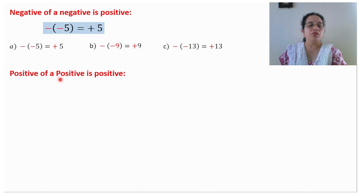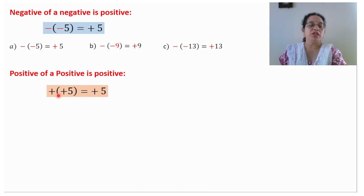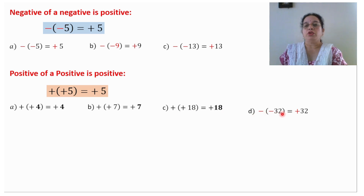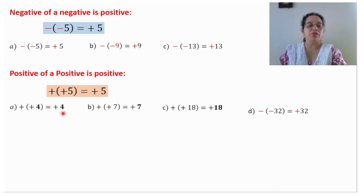Next: positive of a positive is positive. Obviously there is no negative sign so the answer will only be positive. Positive of a positive 4 is positive 4. Positive of a positive 7 is positive 7. Positive of a positive 18 is positive 18. Negative of a negative 32 will be positive 32. So, negative of a negative is positive, and positive of a positive is positive.